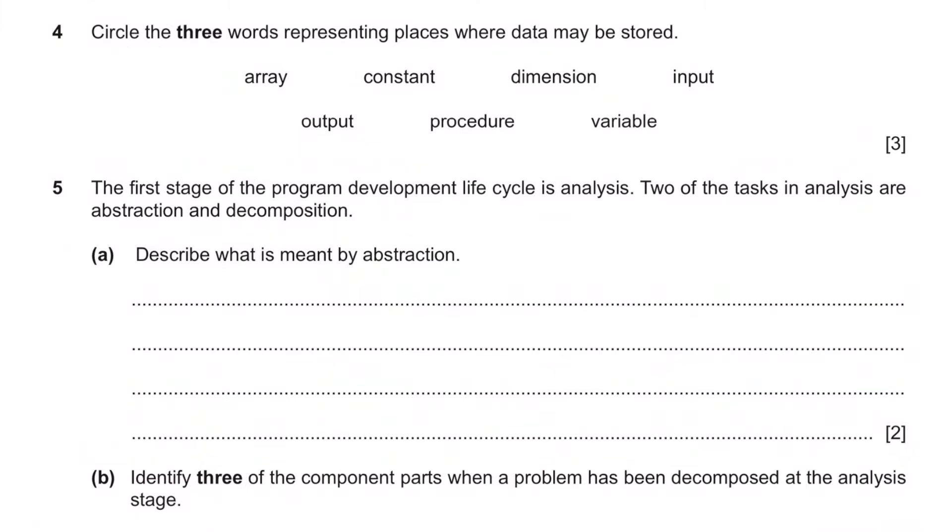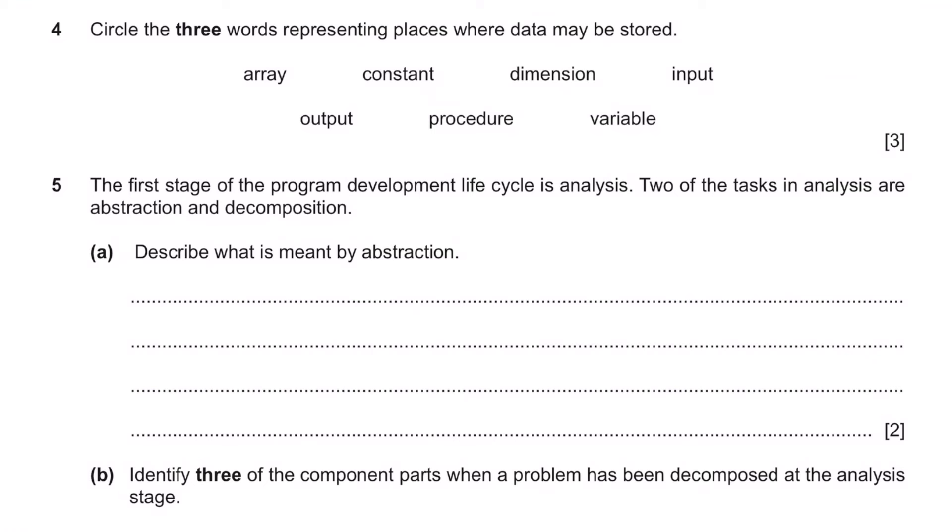Question 4: Circle the three words representing places where data may be stored. Data can be stored in an array, absolutely. It can be stored in a constant. Input, output, no. A procedure, no. And a variable. So there would be the three: an array, a constant, and a variable. The constant might be the one that throws you because data would already generally be stored in that, and it's data that can't be changed, such as days of the week or months in a year. But it is still storing data.